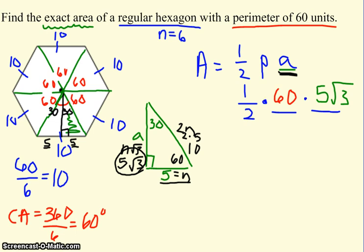Since it is a multiplication problem, I can really multiply this in whatever order I want. I'm going to go from left to right. So first I'm going to do one half times 60. Multiplying by one half is the same thing as dividing by 2. So one half times 60 is 30. So then I have 30 times 5 root 3.